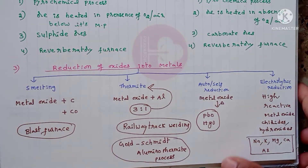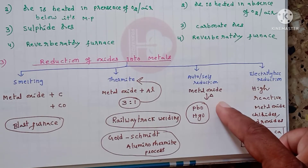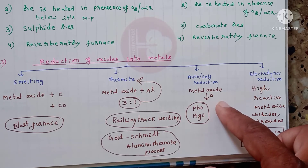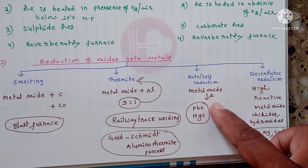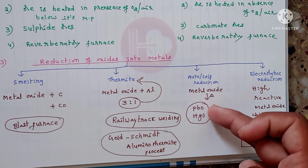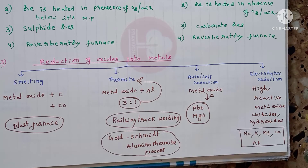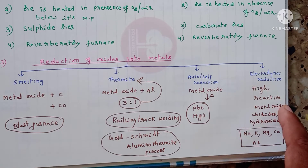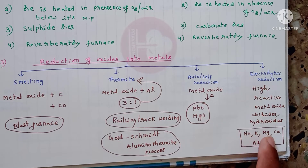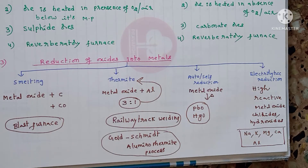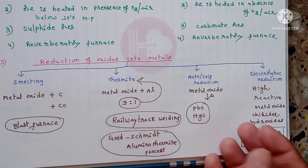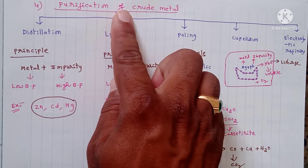In the auto/self-reduction process, the metal oxide itself acts as a self-reducing agent and under heating converts into metal. This method is mainly applicable for lead oxide and mercury oxide. In electrolytic reduction, highly reactive metal oxides, chlorides, or hydroxides — such as those of sodium, potassium, magnesium, calcium, and aluminium — undergo electrolytic reduction to yield the pure metal.